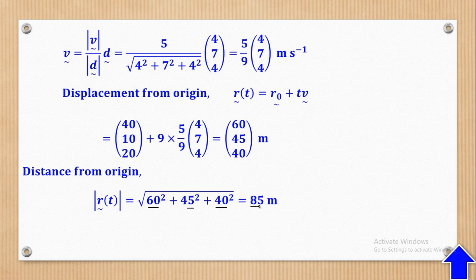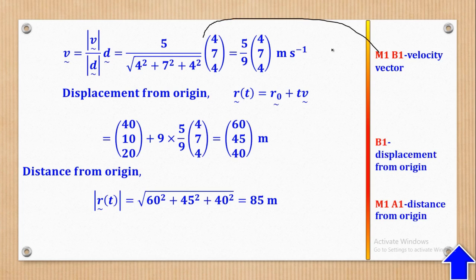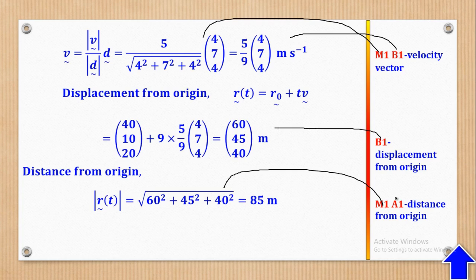Now let's see how marks are awarded. M1 is for substituting, B1 is for getting the velocity vector, another B1 is for getting the displacement from the origin, M1 is for substituting, M1 is for substituting, and A1 is for getting the output. That's how the 5 marks come about.